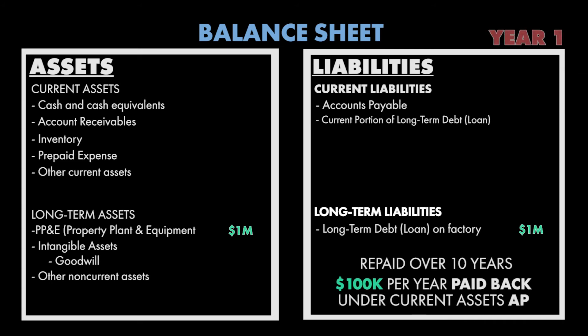That first year you're actually going to have two different liability accounts for that same loan. The first one is a current liability called 'current portion of long-term loan' and that's going to be $100,000 that you owe that year. The other account is a long-term liability for $900,000 and that's just called long-term loan.